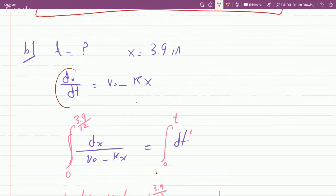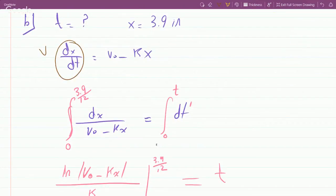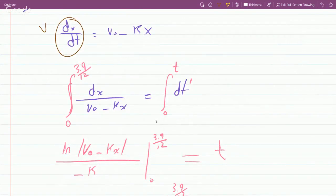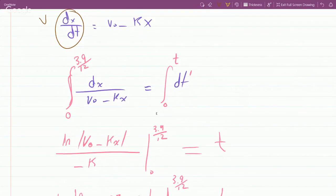So I'm given information on the distance. I know v is just dx over dt in my original equation v₀ minus kx. I can separate the variables, integrate to find t, which I did. So I divided both sides by v₀ minus kx, multiplied both sides by dt, and then I inserted the integrals afterwards. I'm integrating from 0 because it goes from here, starting at t equals 0 at x equals 0, and then it goes to 3.9, so that's 3.9 over 12 to change it to feet, equals 0 to t.